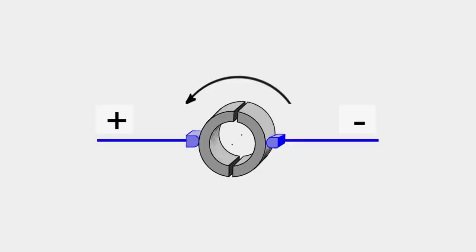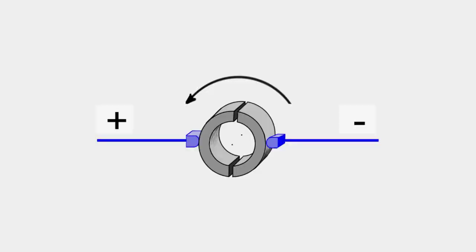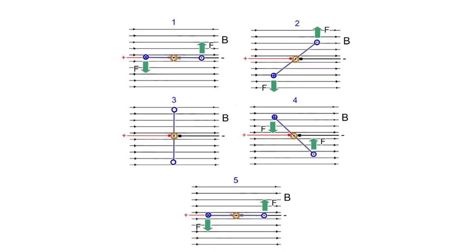Two brushes which contact, or brush against the commutator, are attached to the power supply. As the loop rotates, the split ring rotates with it, and when the loop reaches normal to the magnetic field, the current in the loop is reversed, meaning that the loop continues to rotate.